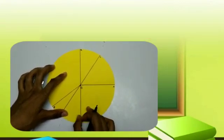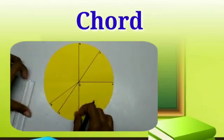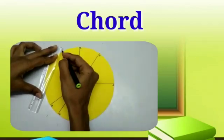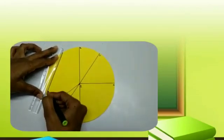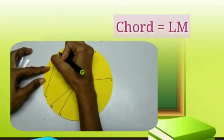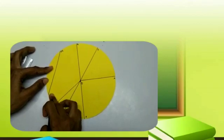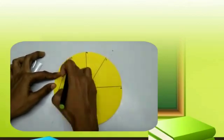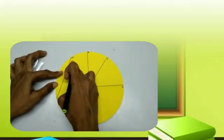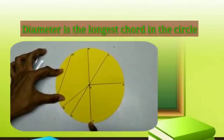Now, chord. Chord is the line which touches two points on the circle. So, we can say that the diameter is the longest chord in the circle.